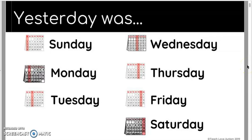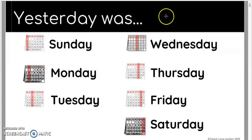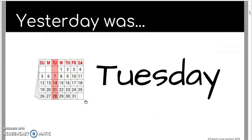The first slide is 'yesterday was.' Anywhere you see a hand appear is a clickable image. As you can see, there's no hand at the top, but when I move down to the days of the week there is. So let's pretend yesterday was Tuesday — click it — and then we get the visual 'yesterday was Tuesday.' You can even have a student read this as it is a complete sentence, which is nice.